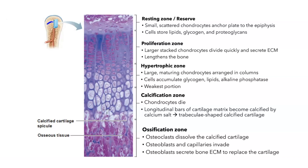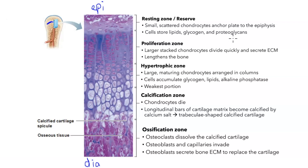We're going to start at the top and move downward. This right here would be the epiphysis of the bone, labeled 'epi,' and down here is the diaphysis, labeled 'dia,' just so we have our orientation in mind. The resting zone is closest to the epiphysis of the bone and consists of small scattered chondrocytes that anchor the rest of the plate to the epiphysis. These cells are inactive — they are not dividing — and the chondrocytes store lipids, glycogen, and proteoglycans, which will be necessary to secrete extracellular matrix for the future steps.